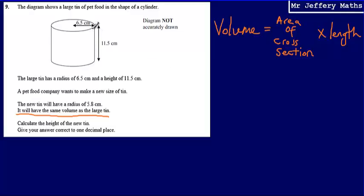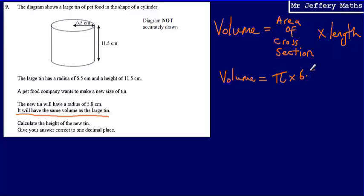The area of the cross-section refers to the 2D shape running through the 3D shape, which in this case is a circle. So to work out the volume of the tin, the area of the cross-section is calculated using π r², which is π multiplied by the radius squared. The radius here is 6.5. That gives the area of the circle, and then I simply multiply by the height, which is 11.5.